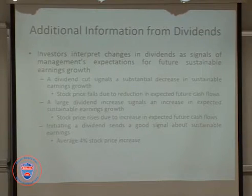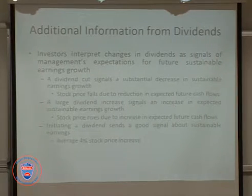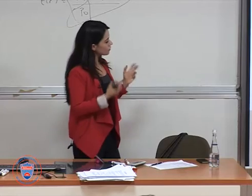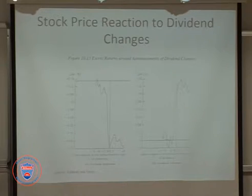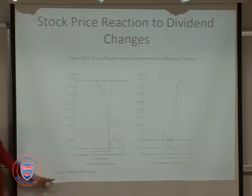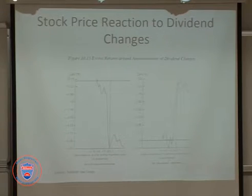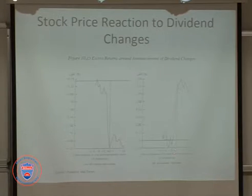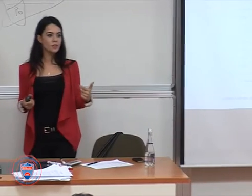This is an example from a study by Aharony and Swary showing how markets react to dividend decreases or increases — these are cumulative abnormal returns. When there is a dividend decrease, there is a negative price reaction from markets. When there is a dividend increase, we see a positive market reaction. Dividend cuts are bad; dividend increases are good.